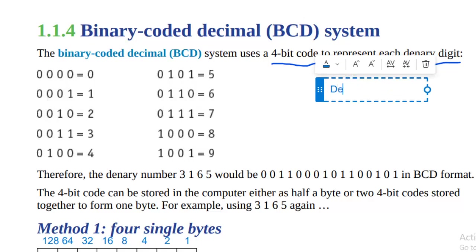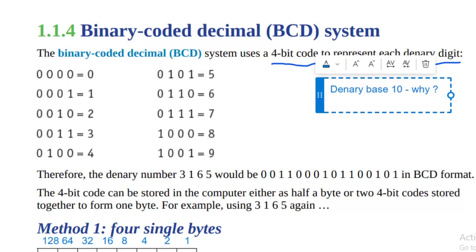Denary number is base 10 — why? Higher order thinking question: why do we call this base 16 for hexadecimal? Because hexadecimal stops at 9 but then changes to A, B, C, while denary numbers go forward from 9 to 10, 11, and so on.